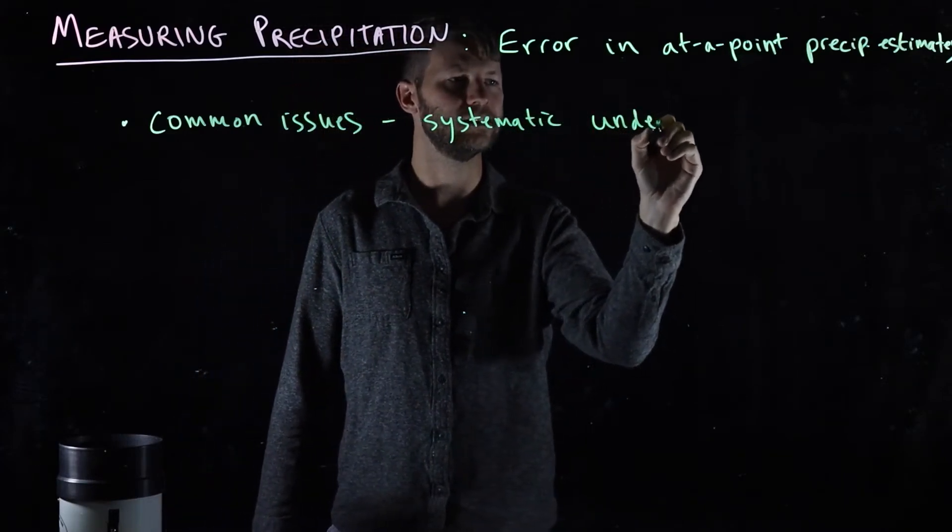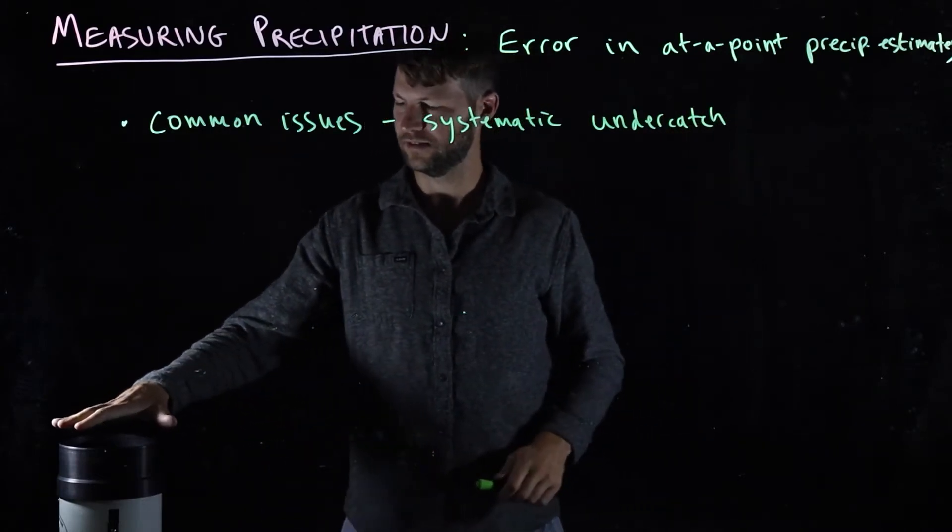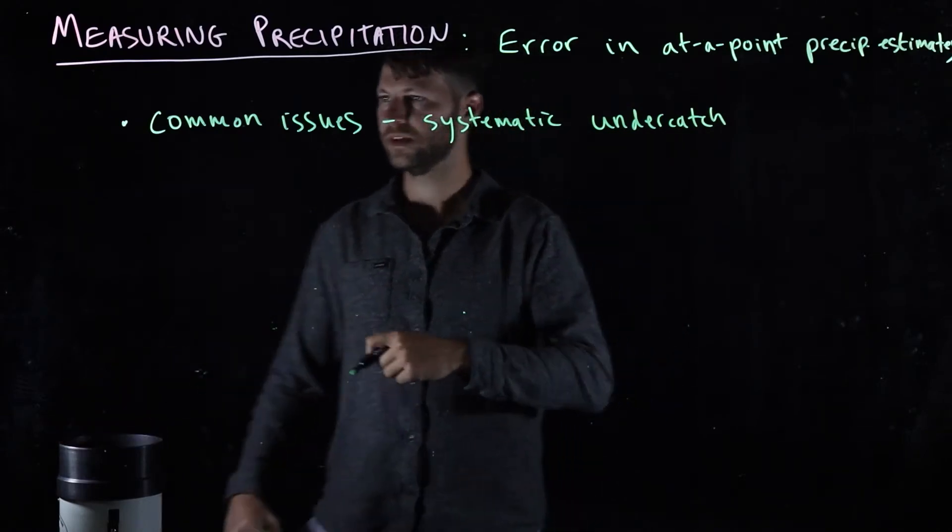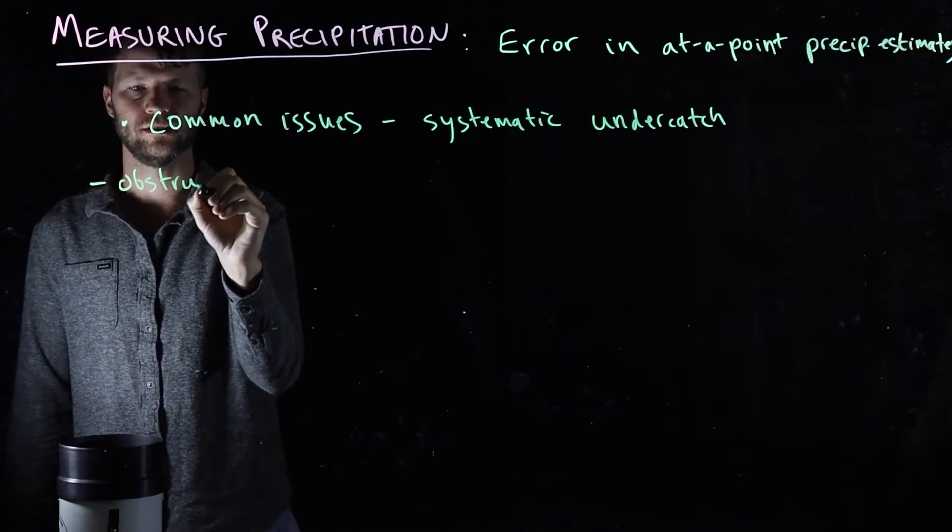And by undercatch, I mean that the rain gauge is underestimating the true amount of rain. So obstructions—this is the first common one.